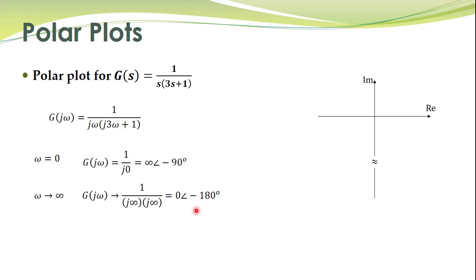So how should we sketch the polar plot? What do you think? What should be the shape of the polar plot? So infinity angle minus 90 degrees, where is that point? Somewhere here at infinity.